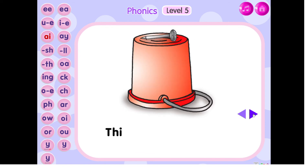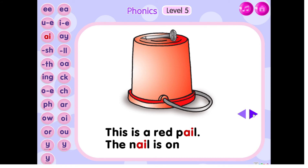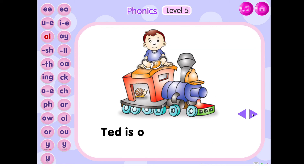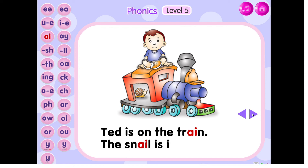This is a red pail. The nail is on the pail. Tad is on the train. The snail is in the train.